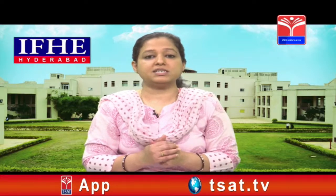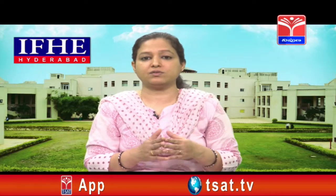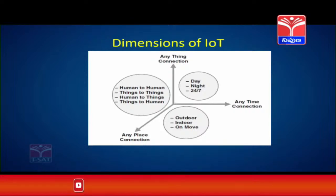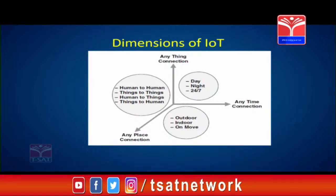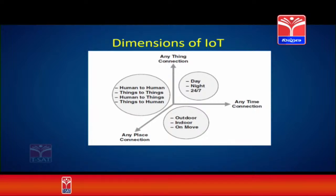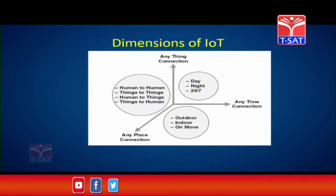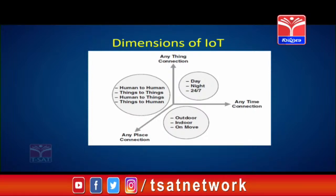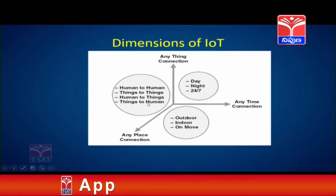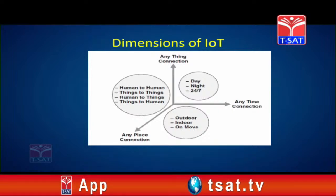We will stress upon the three different dimensions of IoT: connecting from any place, connecting anything, and connecting at anytime. Who can connect through IoT? A person can connect to another person, a device can connect to another device, a person can connect to a device, and a device can connect to a person. Devices are also termed as things — so you can have human-to-human, things-to-things, human-to-things, and things-to-human interaction.